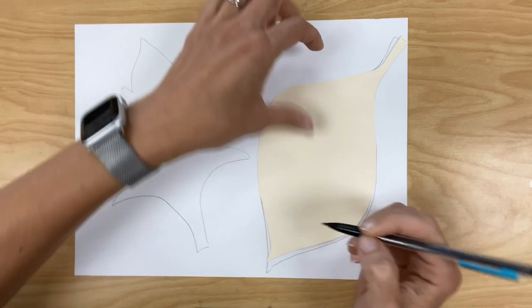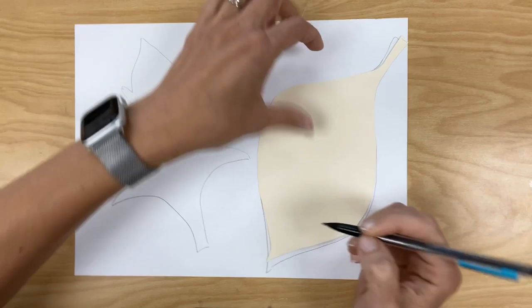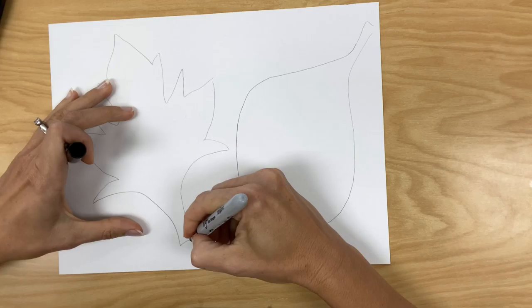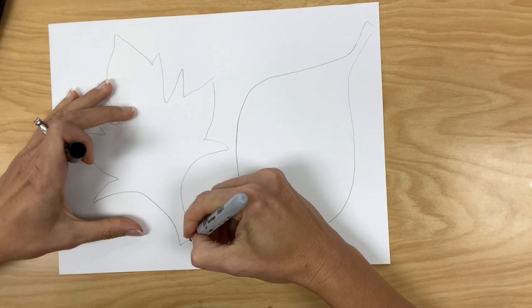So you're going to first outline your leaf with pencil or draw it with pencil, just the outline. And then after you've outlined two leaves, then you're going to go over your pencil line with a black marker or black Sharpie.